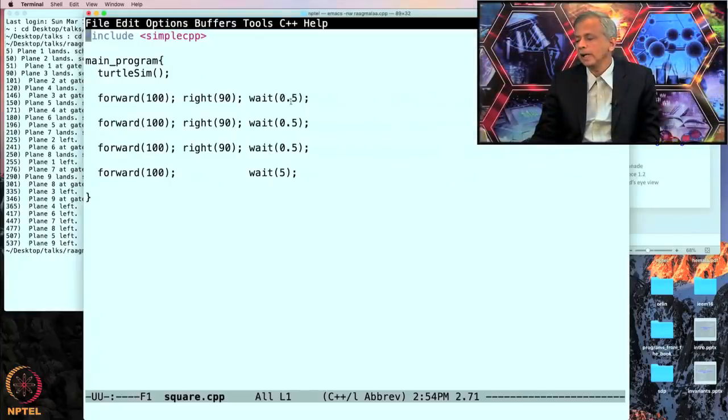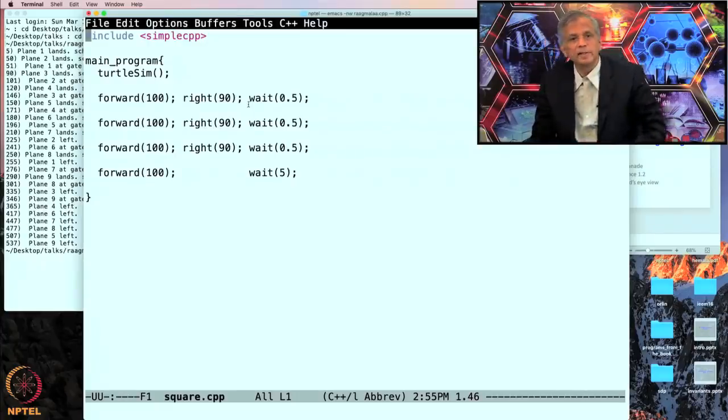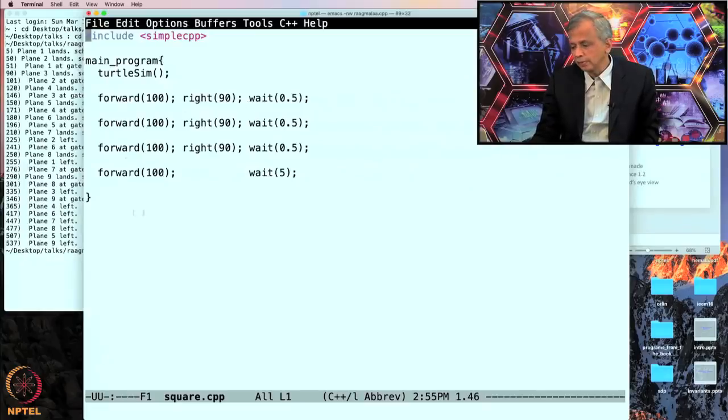So these waits 0.5, 0.5 are going to tell the turtle to wait for about half a second after each forward and right step. If I do not do that, then a computer works very fast. So the turtle will move very fast and before you see it everything will be drawn and you will not really be able to see the movement in any nice way. So therefore we have put in these waits, these additional waits. So this has been typed into an editor and it is now in a file called square.cpp.